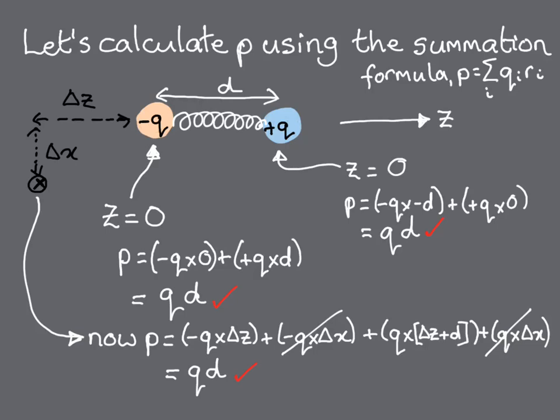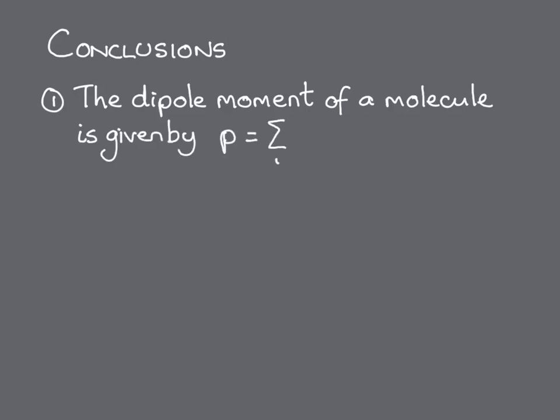So we can conclude that the dipole moment of a molecule is given by the sum of the charges on the ions times their positions, at least in the limit in which we can think of the molecule as being made of localized ions.